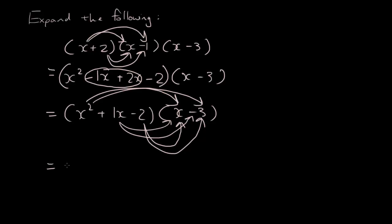So I have x squared times x is x cubed, x squared times minus 3 is minus 3x squared, x times x is plus x squared, x times negative 3 is minus 3x.